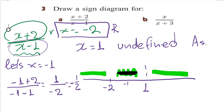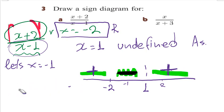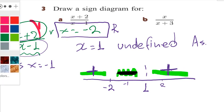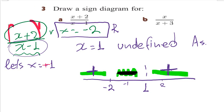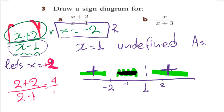So what's happening — is it alternating or not? Both x + 2 and x − 1 have index 1, so it will alternate. Therefore this region will be positive and this one will be positive as well. Let's confirm: if x = 2, then (2 + 2)/(2 − 1) = 4/1, which is larger than 0, so it is positive.